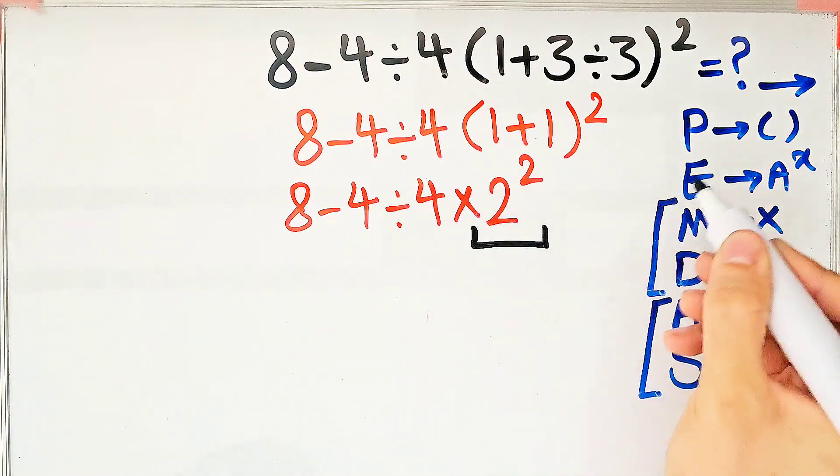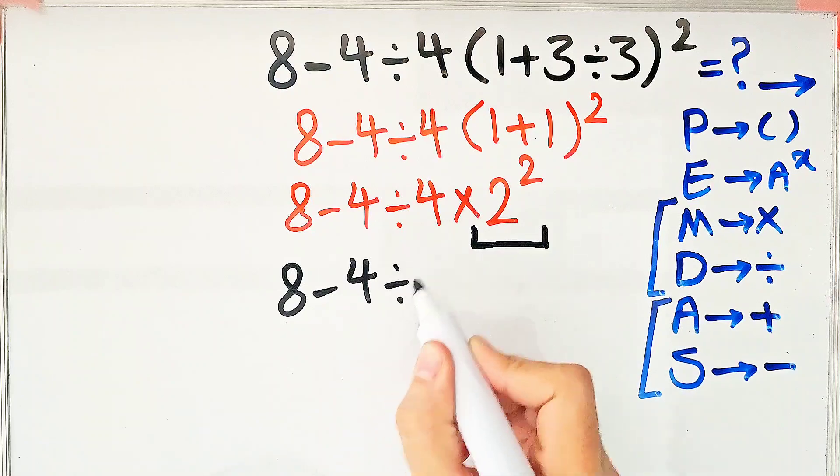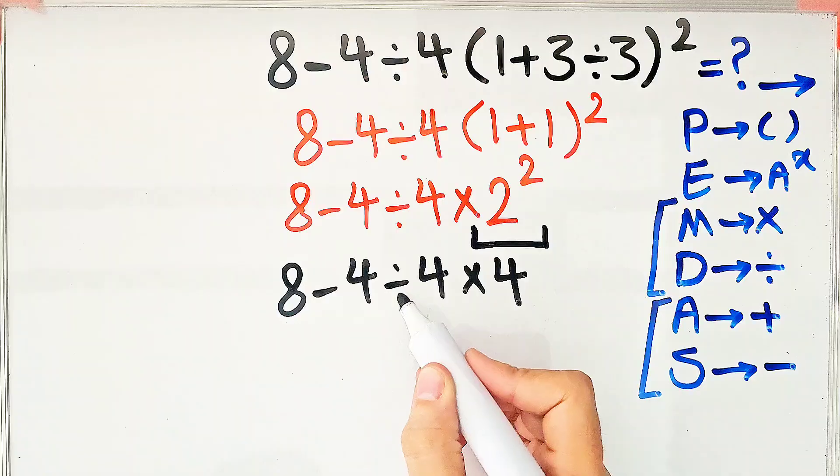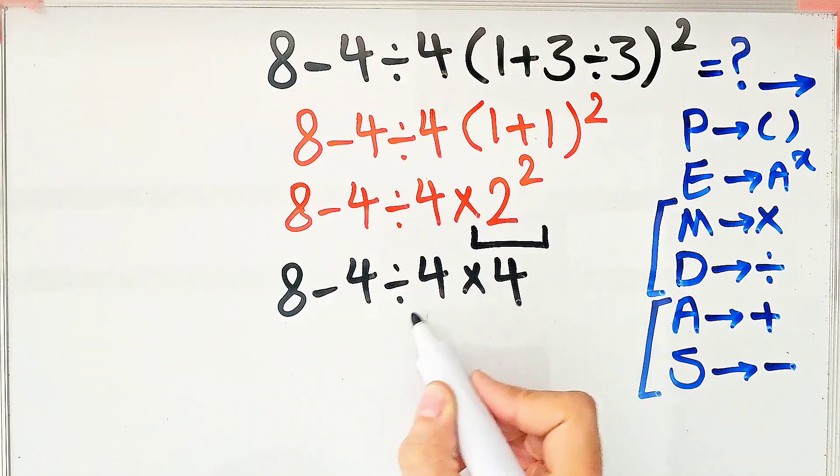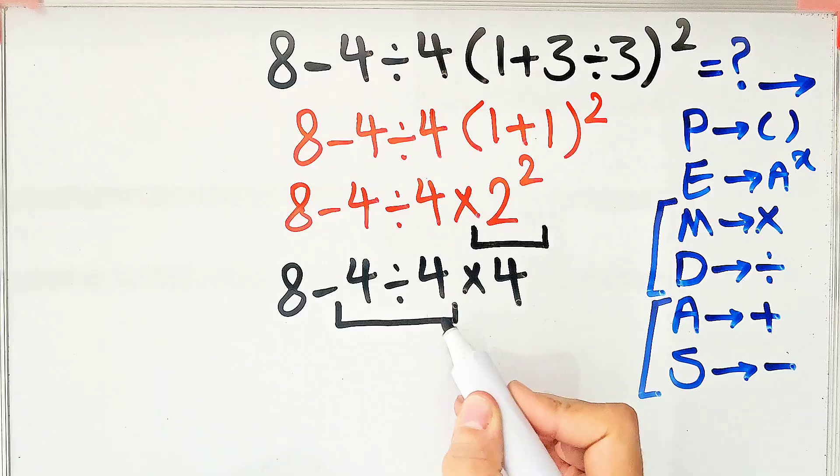Now the question is 8 minus 4 divided by 4, then times 4. In this step we have subtraction, division, and multiplication. First we do this division. Negative 4 divided by 4 equals negative 1.